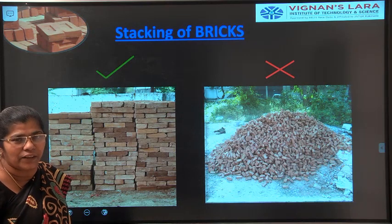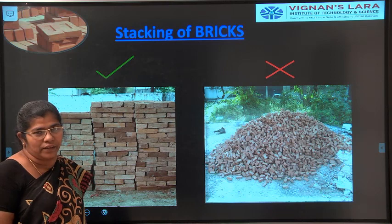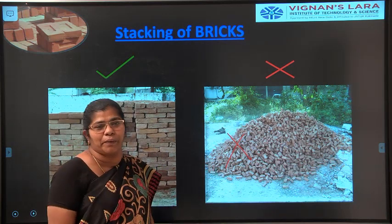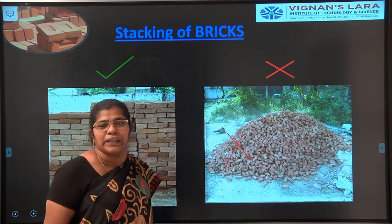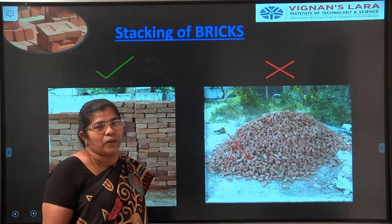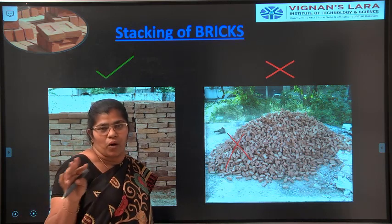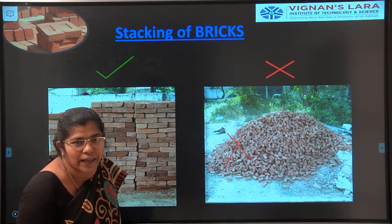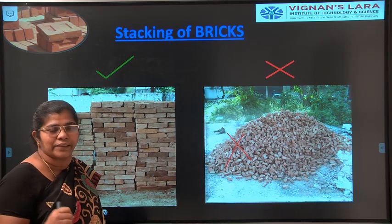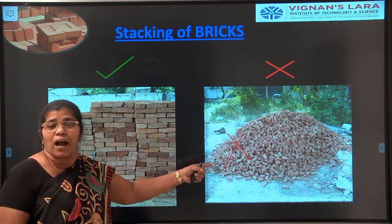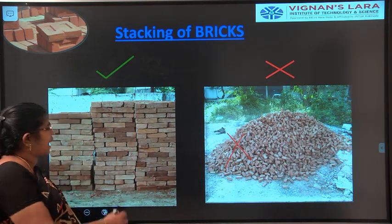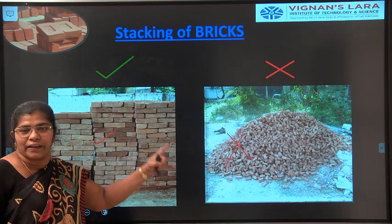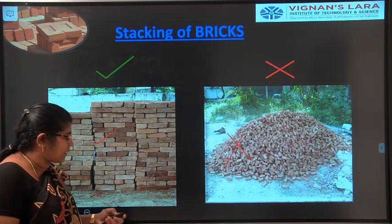As a civil engineer in the field, you should know how to stack bricks properly. Stacking bricks one by one without care causes edges to collide and break down. If edges break, proper bonding will not be achieved in a brick wall, requiring more binding material — cement mortar, lime mortar, or fly ash with cement and sand — which increases the cost. Bricks exposed to rain or weathering without proper stacking will easily break.